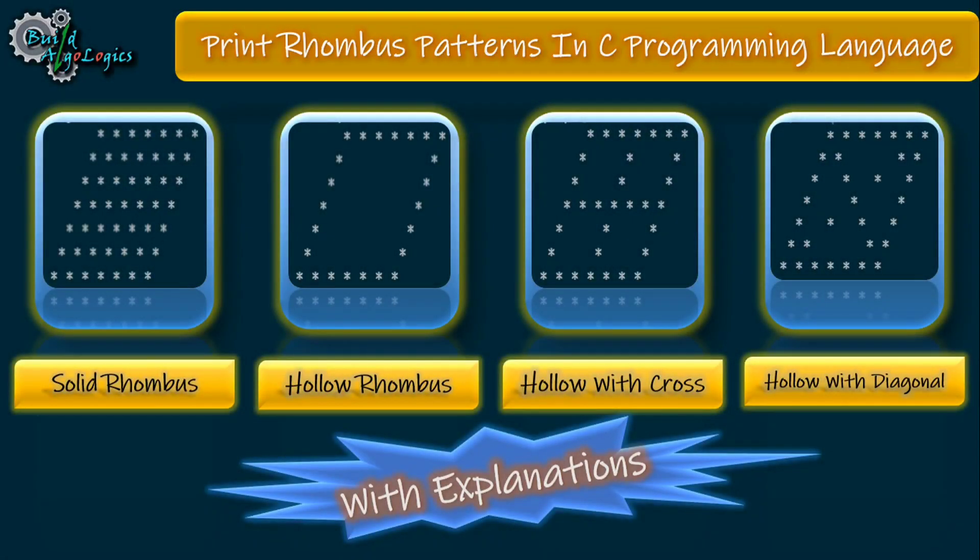Hello and welcome, myself Rehan Ali. Today in this tutorial we'll see how we can write code to print these four patterns. We'll first draw solid rhombus, then hollow rhombus, hollow rhombus with cross, and the last one hollow rhombus with diagonal. Now without any further ado, let's get started.